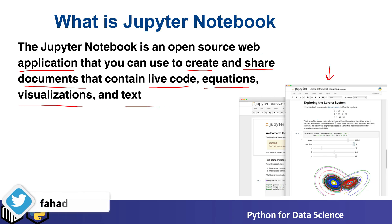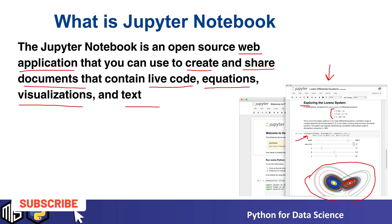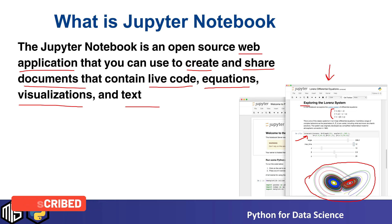If you pay attention here, we have the equation, we have text, and we have code inside the cell, and we have the visualization all in the same place. That's the beauty of using Jupyter Notebook — you can actually run the code, write the text, write the equation, and write your notes all at once on the same page.